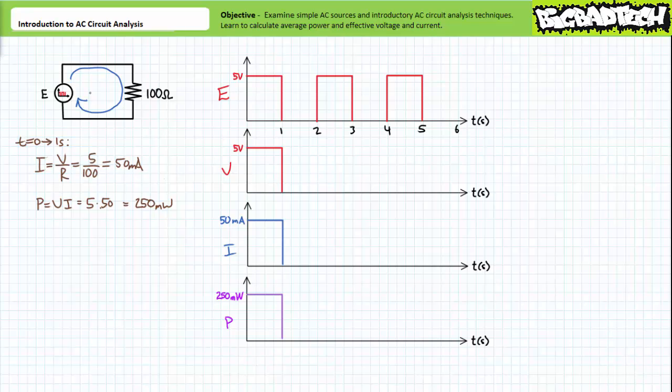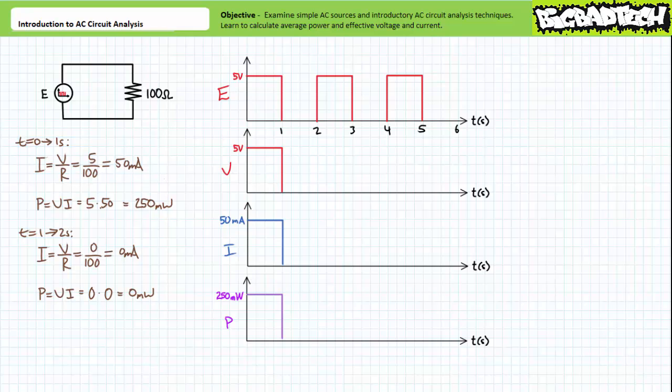When 5 volts is applied to the 100-ohm resistive load, a 5-volt drop will appear across it, 50 milliamps of current will flow clockwise — a presumed positive direction — and the resistive load will dissipate 250 milliwatts of power. When zero volts is applied to the 100-ohm resistive load, there will be a zero-volt drop across it, zero milliamps of current will flow through it, and the resistive load will dissipate zero milliwatts of power.